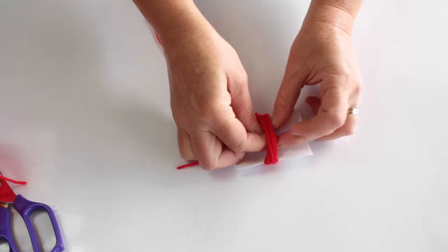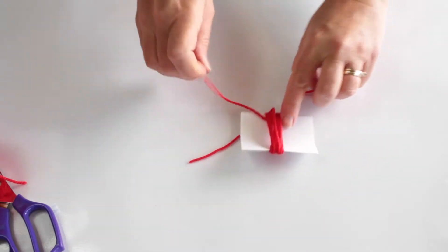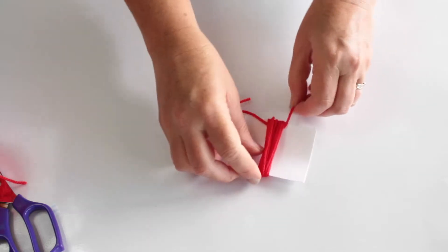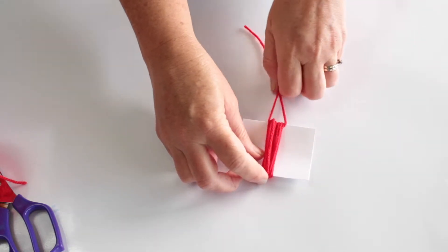With a short piece of wool, tie a knot through one end of the wrapped wool. Cut the loops and you have made the hair.